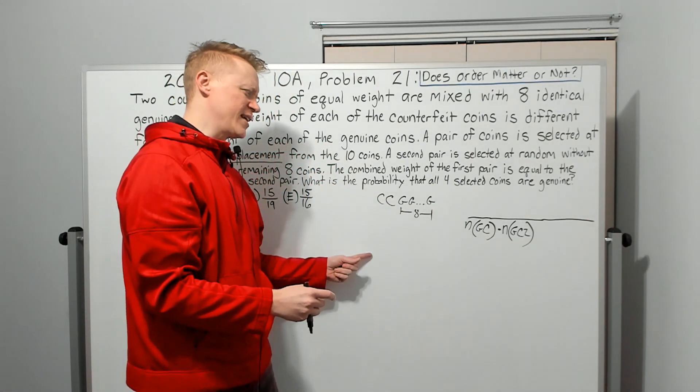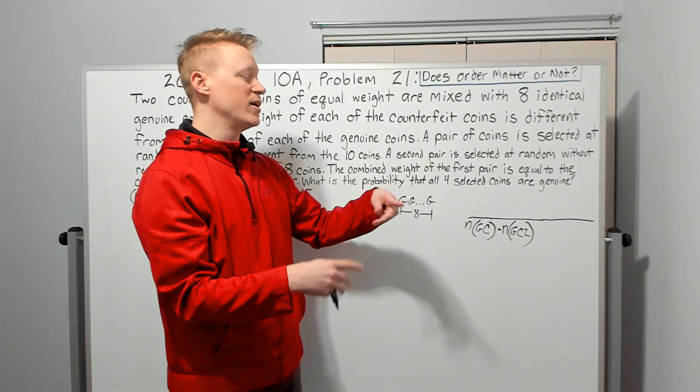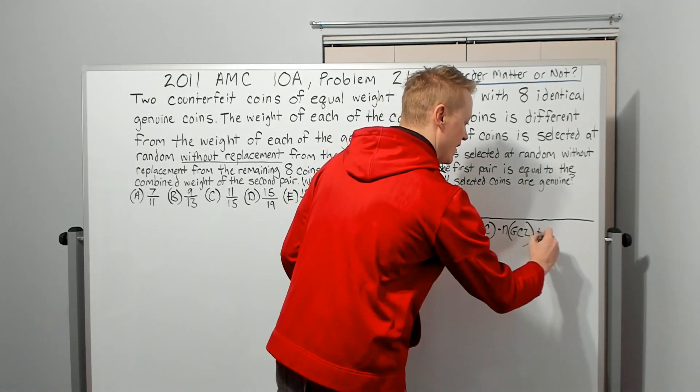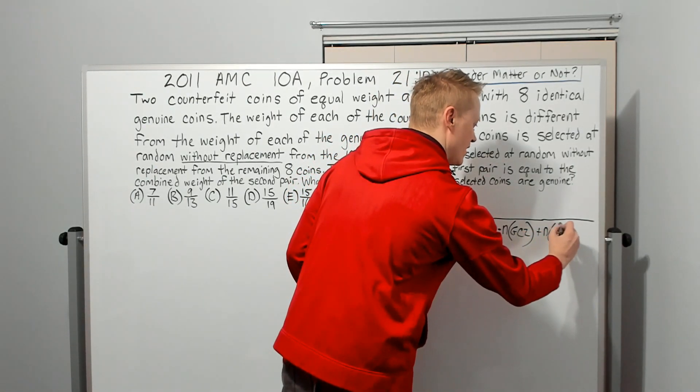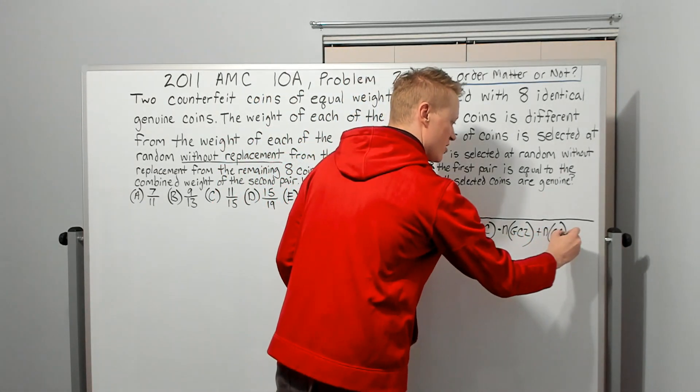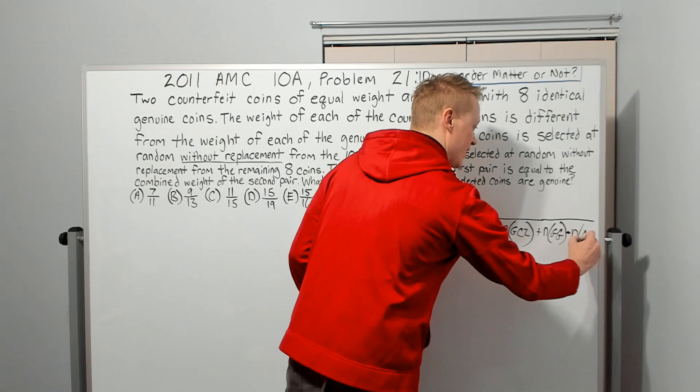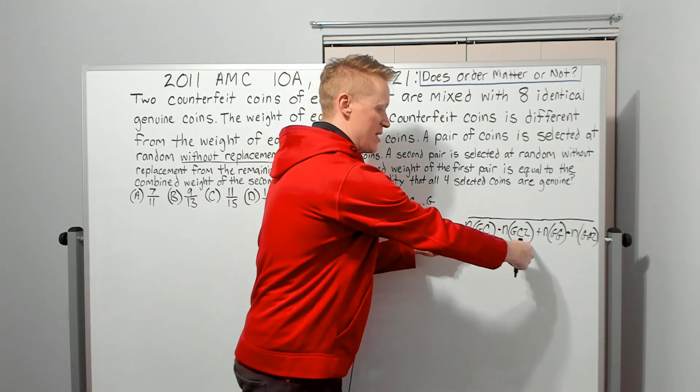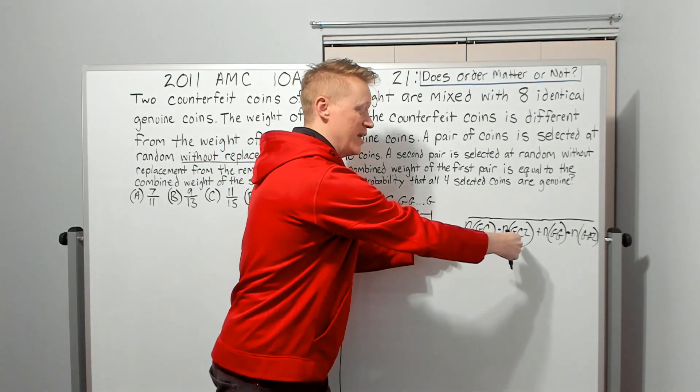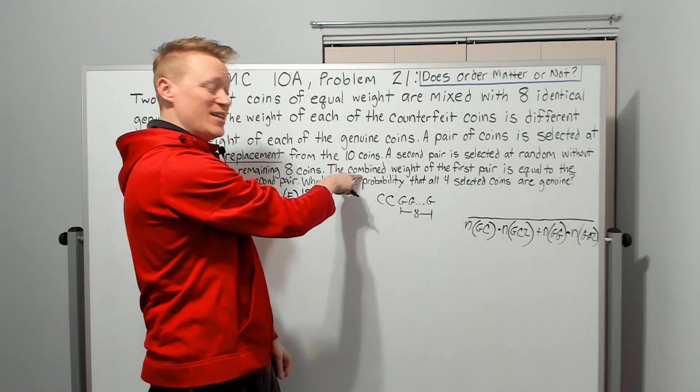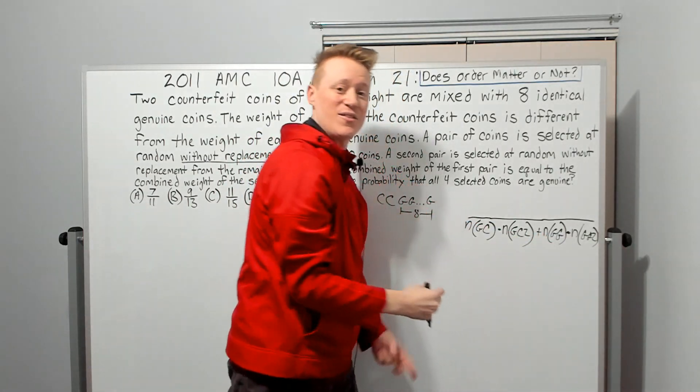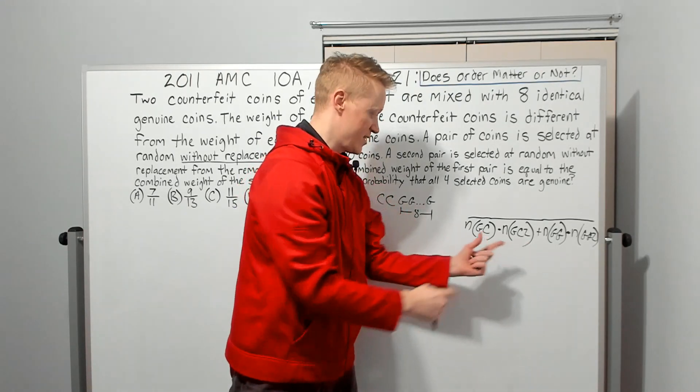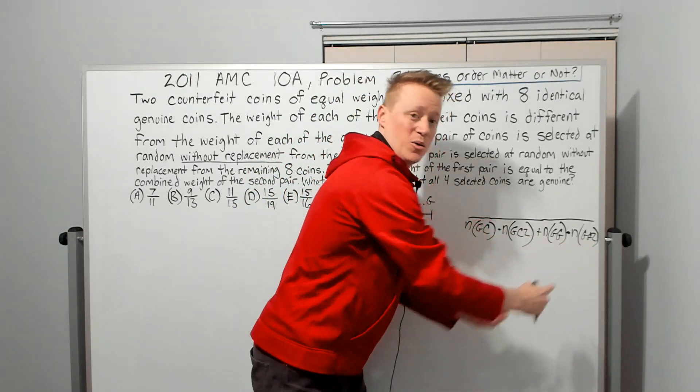Could we have counterfeit counterfeit with genuine genuine? The answer is no, because the counterfeit coins don't weigh the same as the genuine coins. But there is another way, and that's the way that we actually want. That is the number of ways of getting genuine genuine, again also times the number of ways of getting genuine and genuine on the second draw. Now you notice we added in the middle because these are not like they're independent. Like this is one situation plus another way for the given information to occur. These are the two ways the given thing could occur: the combined weight of the first draw equals the combined weight of the second draw. This is one of the ways that can happen. This is the other way that can happen.